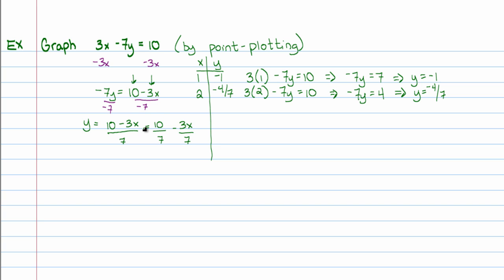Dividing both sides by negative 7, I get y is equal to 10 minus 3x all over negative 7. Let me remind you that that is the same as saying 10-sevenths minus 3x over 7. It doesn't matter to me which one you work with, but it may matter to your instructor.